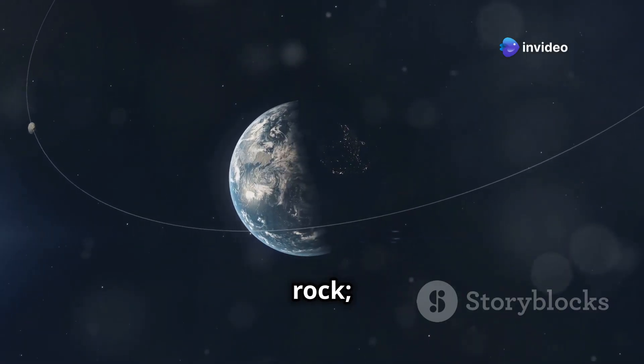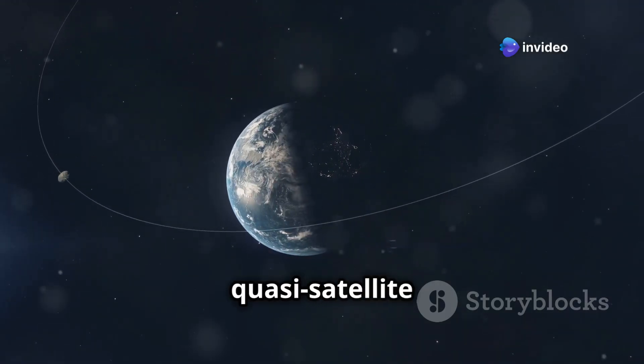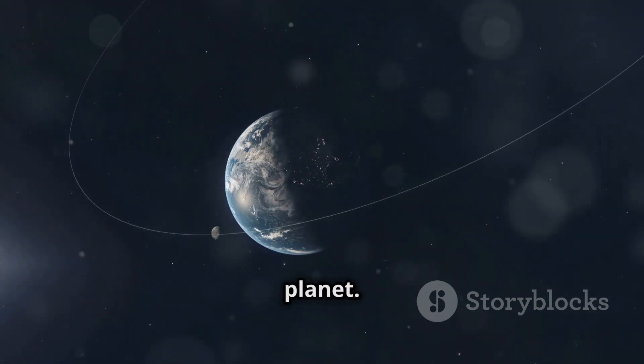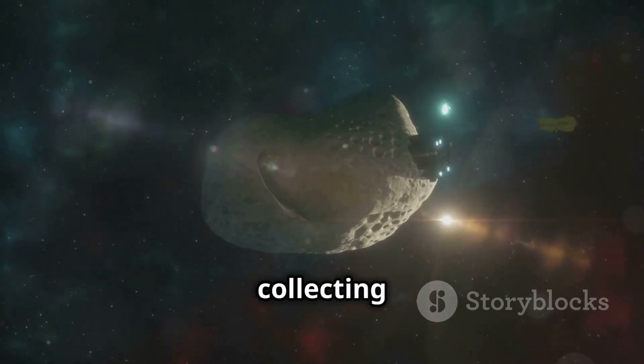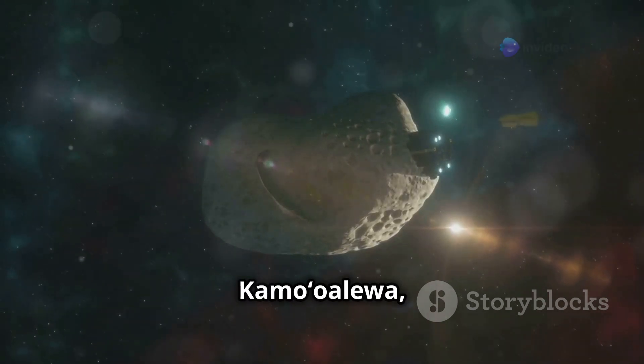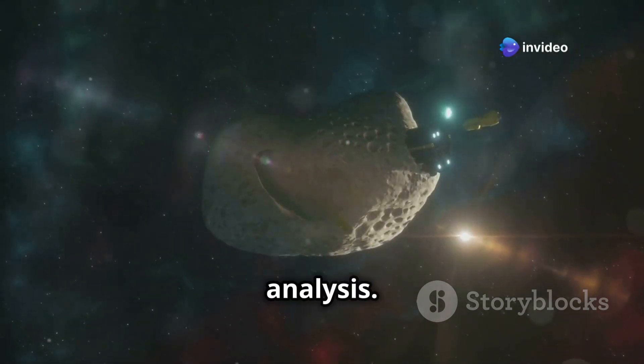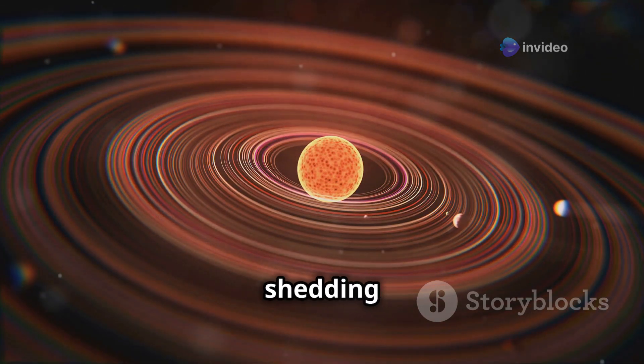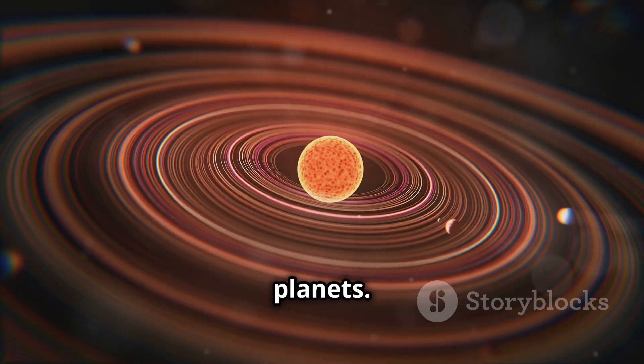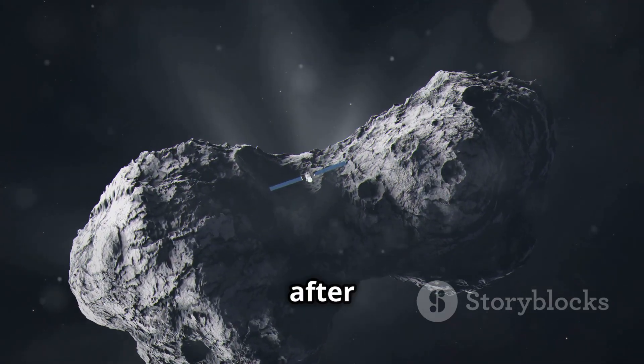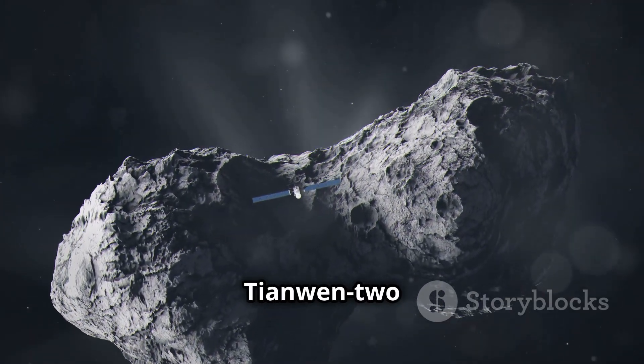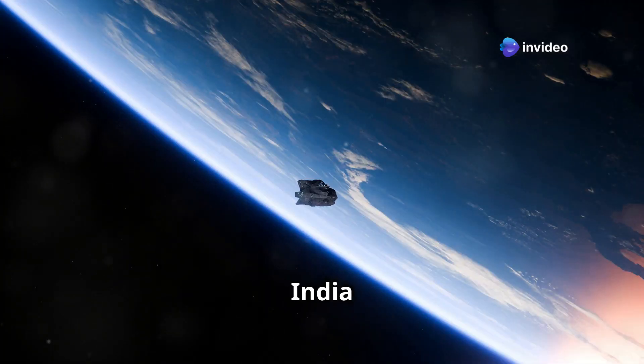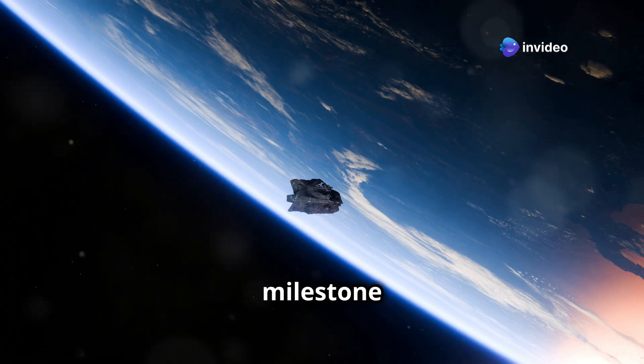From China we have Tianwen 2, a mission that's taking aim at a fascinating target: asteroid Kamo'oalewa. Now this isn't just any space rock—Kamo'oalewa is thought to be a quasi-satellite of Earth, meaning it orbits the sun in a way that keeps it relatively close to our planet. Tianwen 2 will be collecting samples from Kamo'oalewa, aiming to return them to Earth for analysis. These samples could hold clues about the early solar system, potentially shedding light on the formation of Earth and other planets. But that's not all—after its asteroid rendezvous, Tianwen 2 has an even more daring objective: exploring a comet.